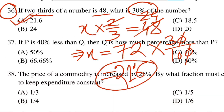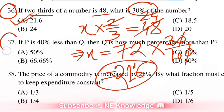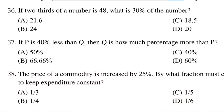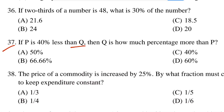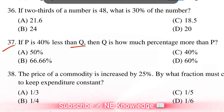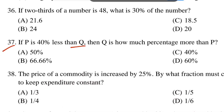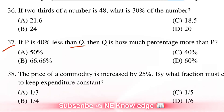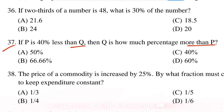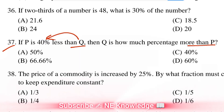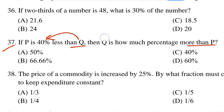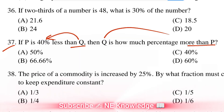Next question is number 37. If P is 40% less than Q, then Q is how much percentage more than P?